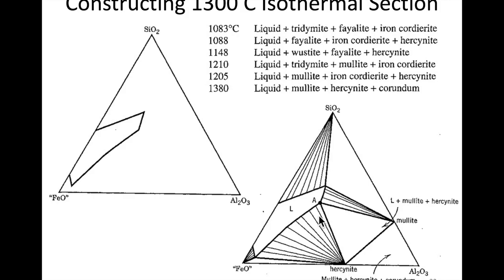In this case, there's an additional feature: over here, we no longer have liquid. If this is the liquidus and we form a tie line back to the solid, it only goes to mullite and hercynite, so that leaves this region where there are only solid phases — only mullite, hercynite, and corundum, with no liquid.